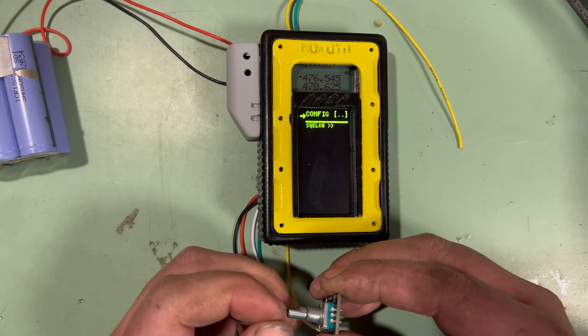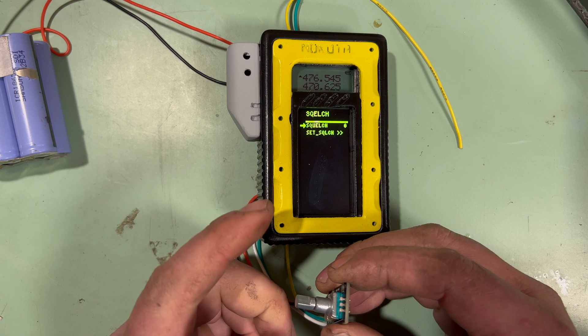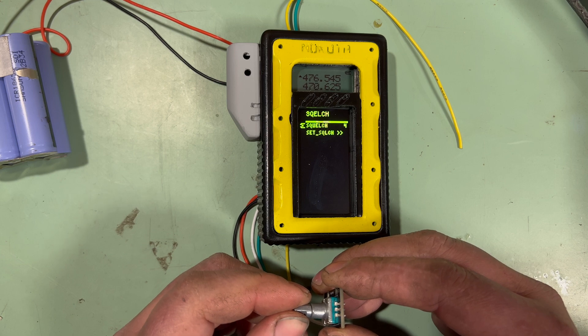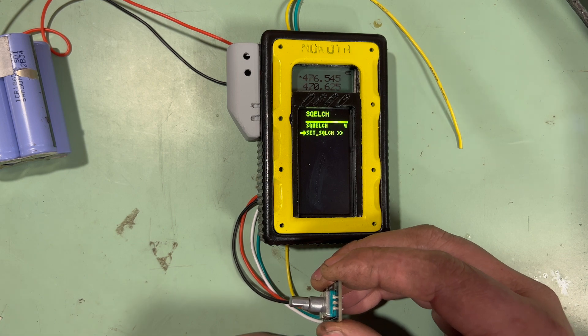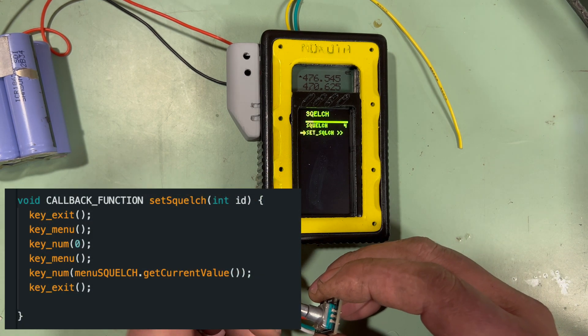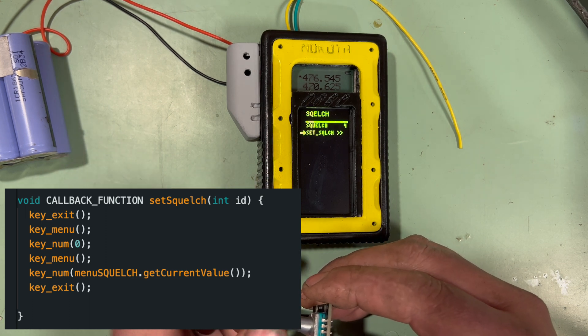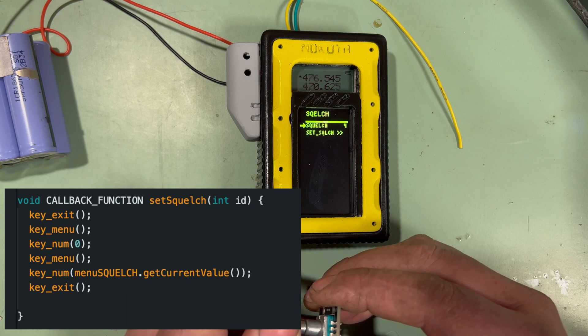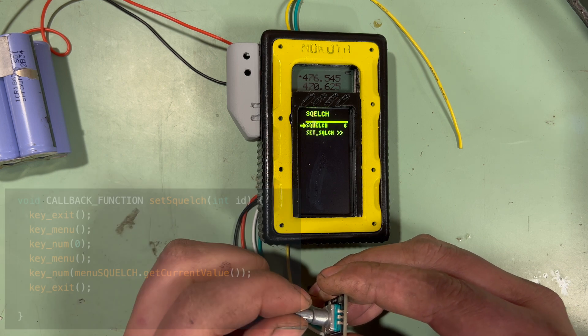There's a config option. The only submenu I've put in here is a squelch app. As you would have seen, you can change the squelch with that menu keypad button, but here you can go in and set squelch, say to four, and hit set, and it does that. It uses what I call a macro. It presses exit to make sure it's on the main screen, presses menu, types zero to make sure it's on the squelch setting page, hits menu again to change to the bottom row, presses the number key that equates to whatever number you've set here, and then presses exit to exit back out.